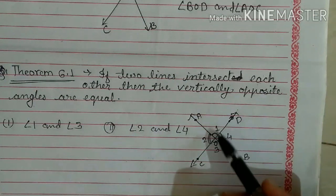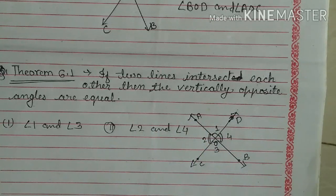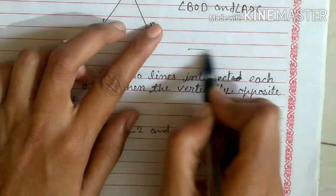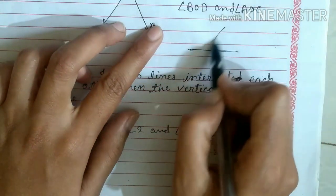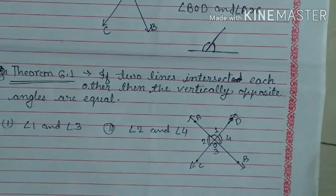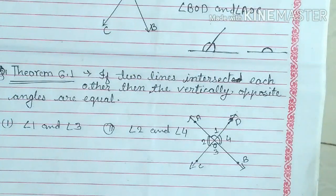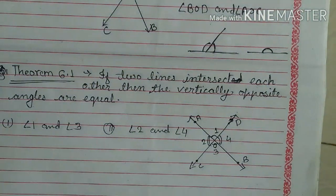तो हम जानते हैं कि opposite angles का जो sum होता है वो 180 degree होता है। Linear pair जो बताया गया था — एक जो linear pair होता है, मैंने पिछले वीडियो में आपको बताया कि linear pair में दोनों angles का sum 180 degree होता है। इस तरीके से: एक straight line है, उस पर एक angle draw किया गया है तो इन दोनों angles का जो sum है वो 180 degree होता है।